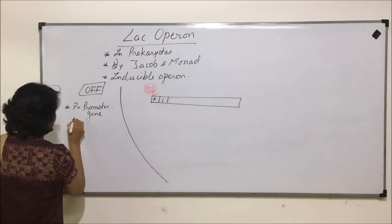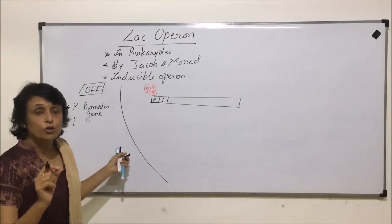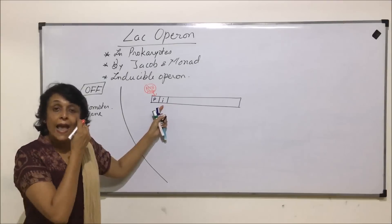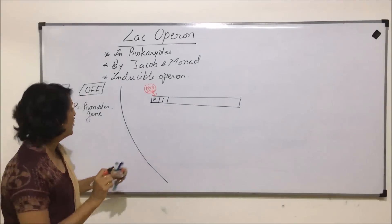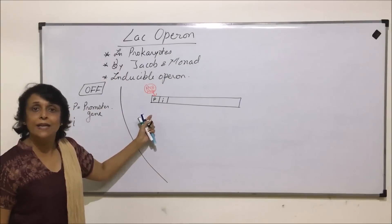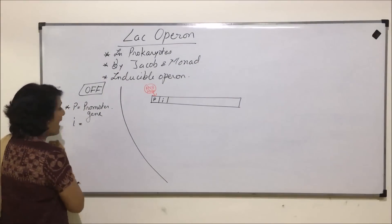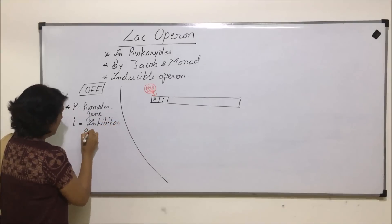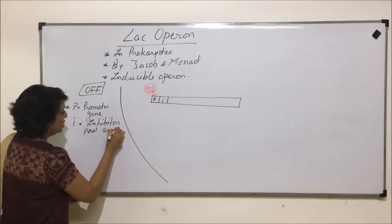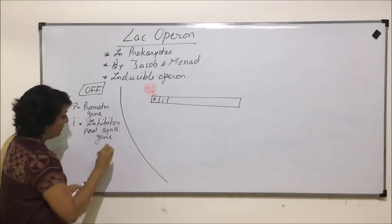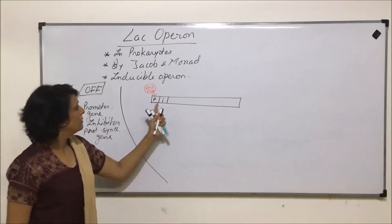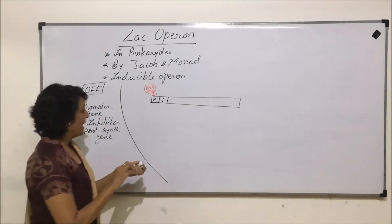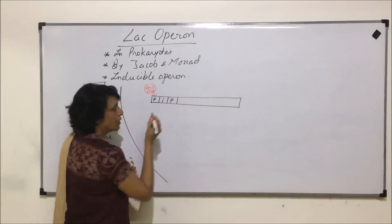RNA polymerase is the enzyme which is going to help in transcription. The next thing present is known as I. Now this I is not for 'inducible' — it actually stands for inhibitor. This gene is going to synthesize a protein which, as it is going to inhibit, we can call it inhibitor protein. So I is the inhibitor protein synthesizing gene — we can also call it the inhibitor gene.